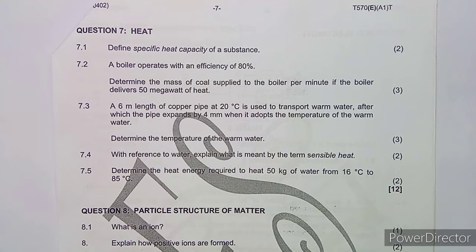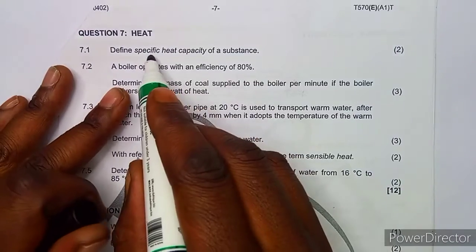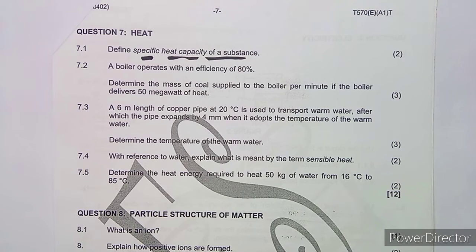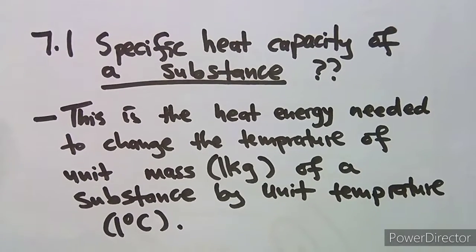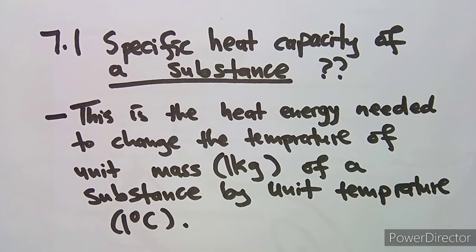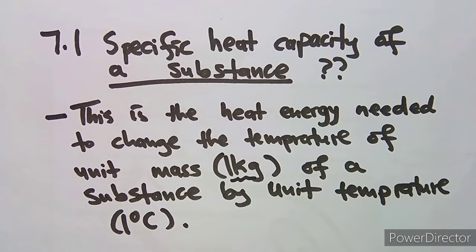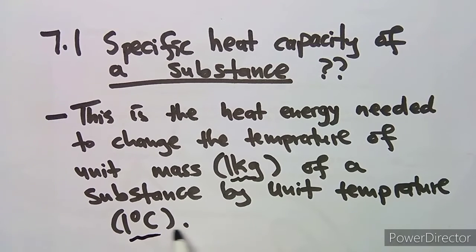The first question asks us to define the specific heat capacity of a substance — that is worth two marks. Definitions should be in accordance with the exams of Nated Engineering. The specific heat capacity can be defined as the heat energy needed to change the temperature of a unit mass — one kg — of a substance.